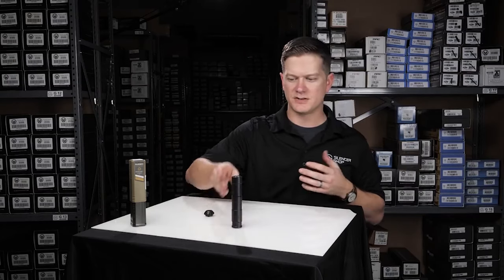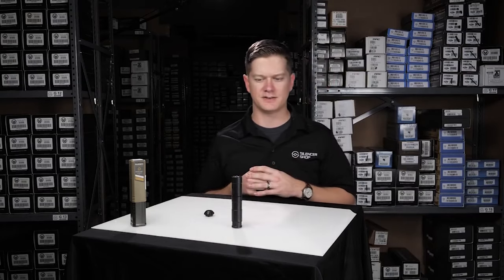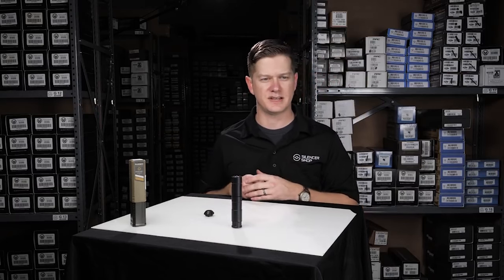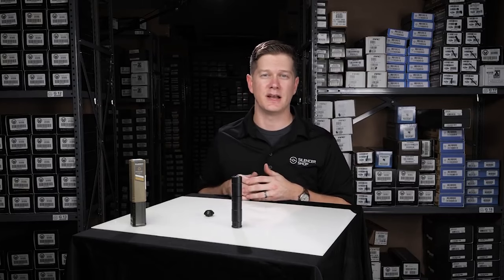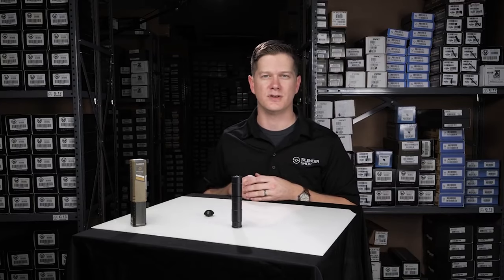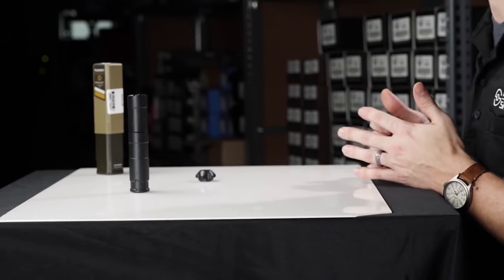All right guys, that's pretty much it for the Rugged Oculus Rimfire Silencer. Again, all 17-4 stainless steel at 5 1/4 inches long in the long configuration and 6.9 ounces, and then 3 1/4 inches long and 4.3 ounces in the short configuration.